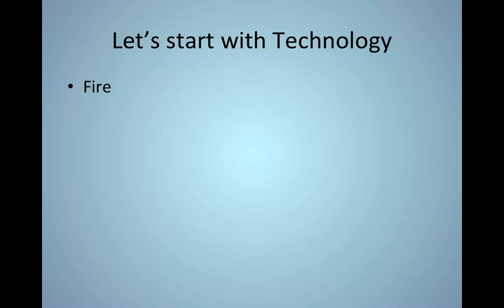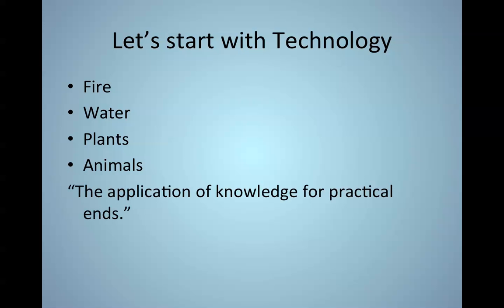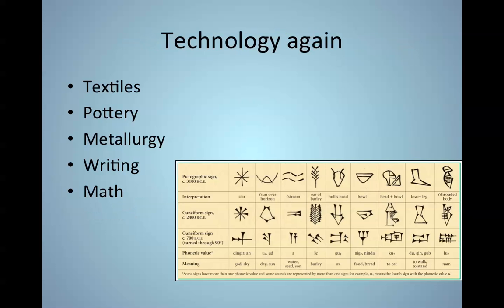Fire. Talk about harnessing something from the material world for practical use. Water. Same thing. Plants. Getting a little higher end for us. How do we harness plants and make them serve our uses? Animals. How do we in the process change our society when we want to harness the power and the effects of water, fire, plants, and animals? So the application of knowledge for practical ends. Very much in evidence in Mesopotamia and in Egypt.